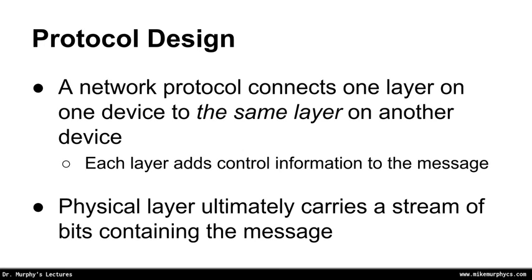Any network protocol that we design connects one layer on one device to the same layer on another device. Each layer of the OSI model adds some control information to the message and adds some features that we can use for our communication. Ultimately, the physical layer is what connects the two devices together and carries a stream of bits containing the message encoded in all of the protocols defined by the layers above it.